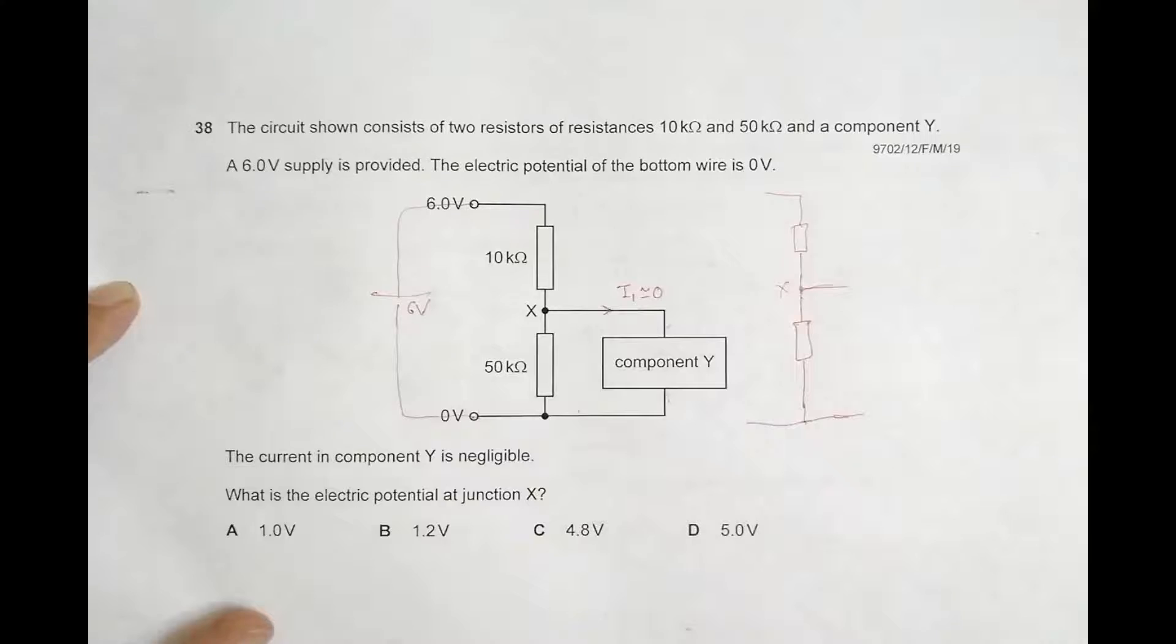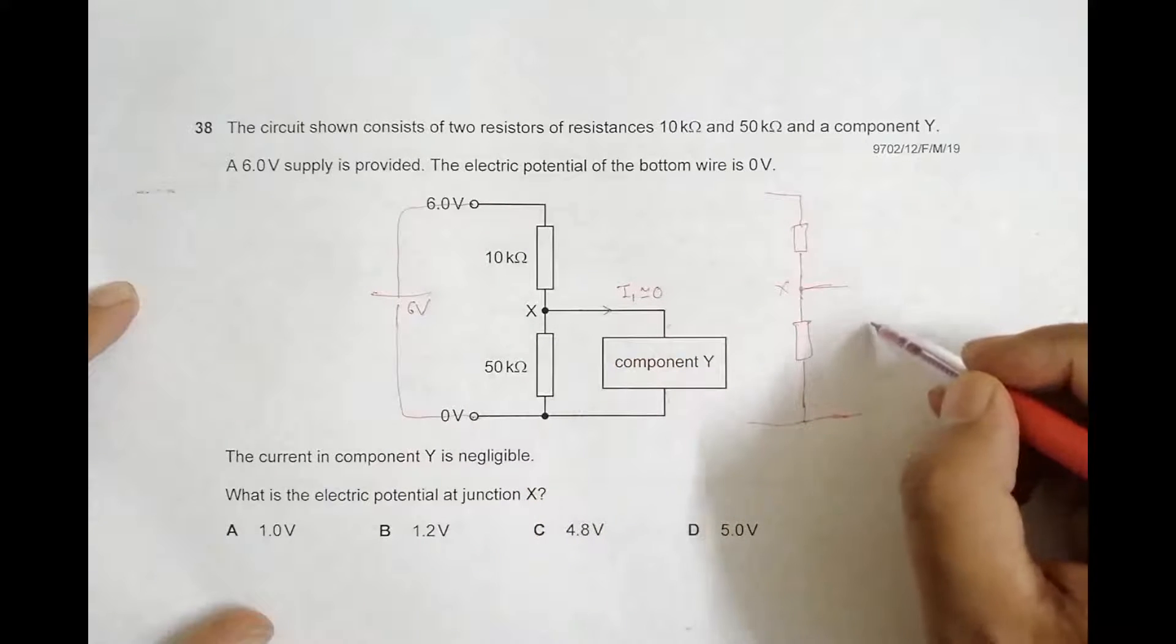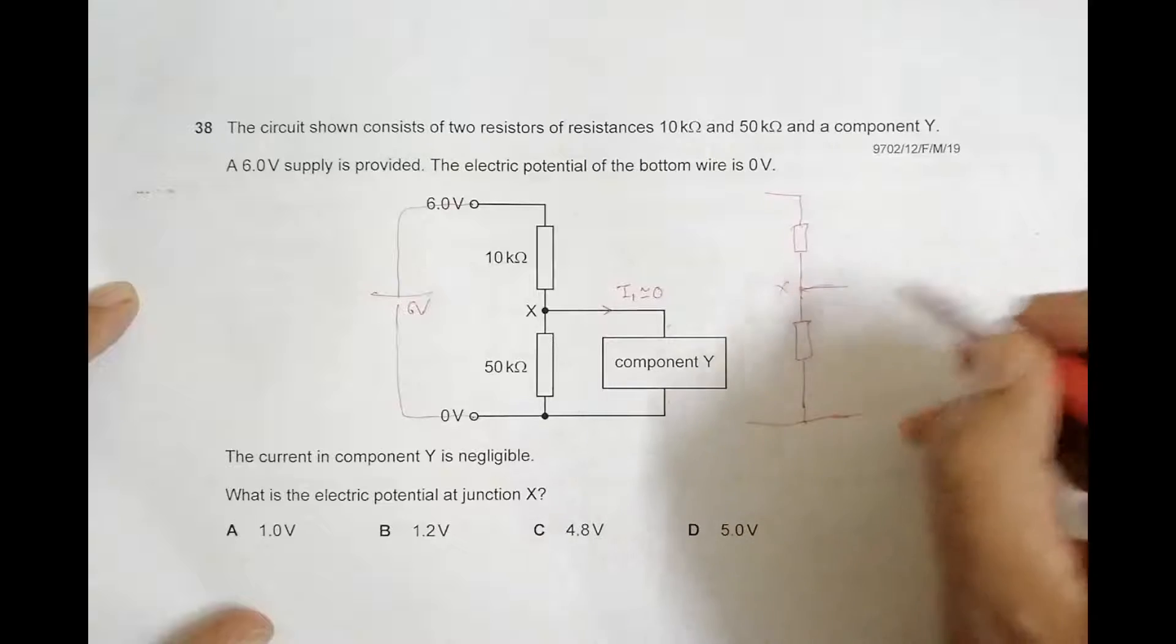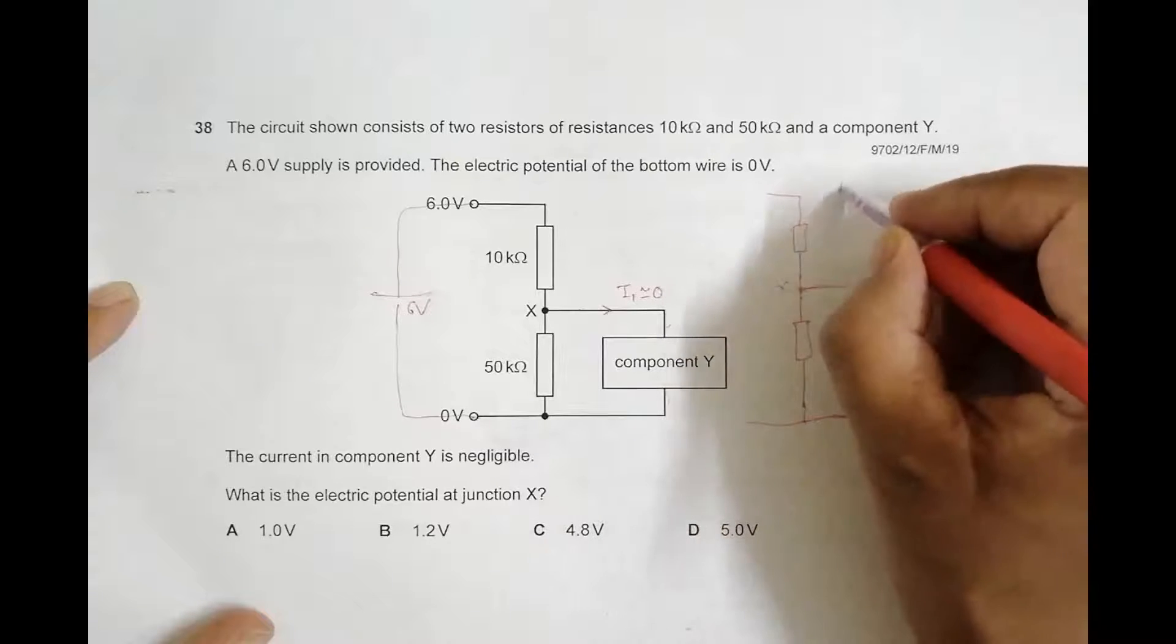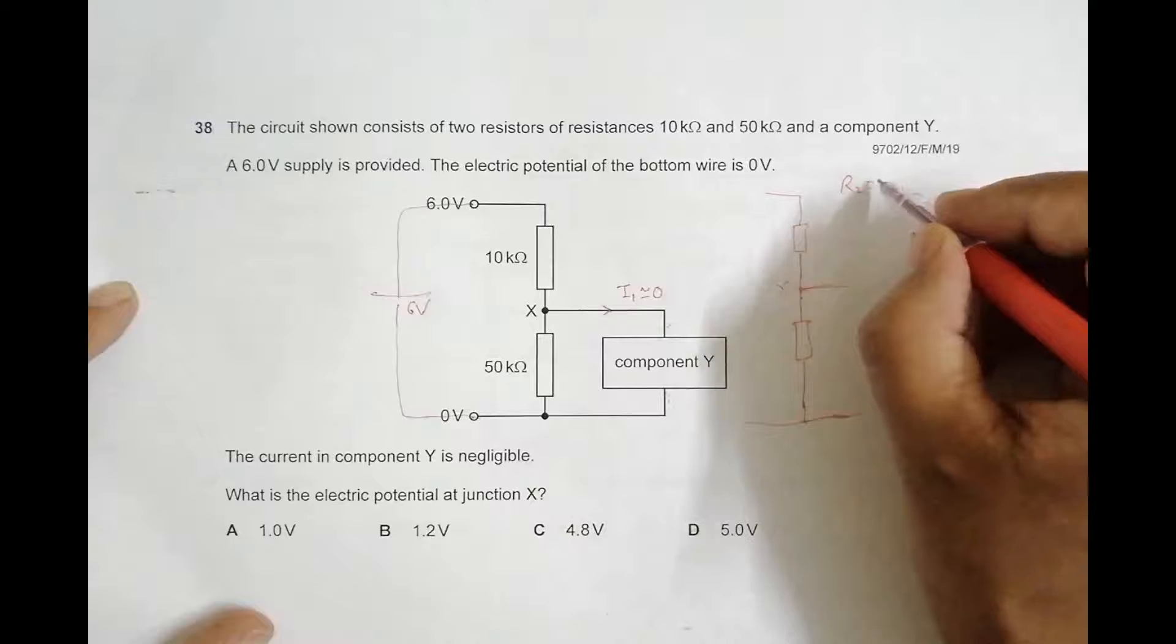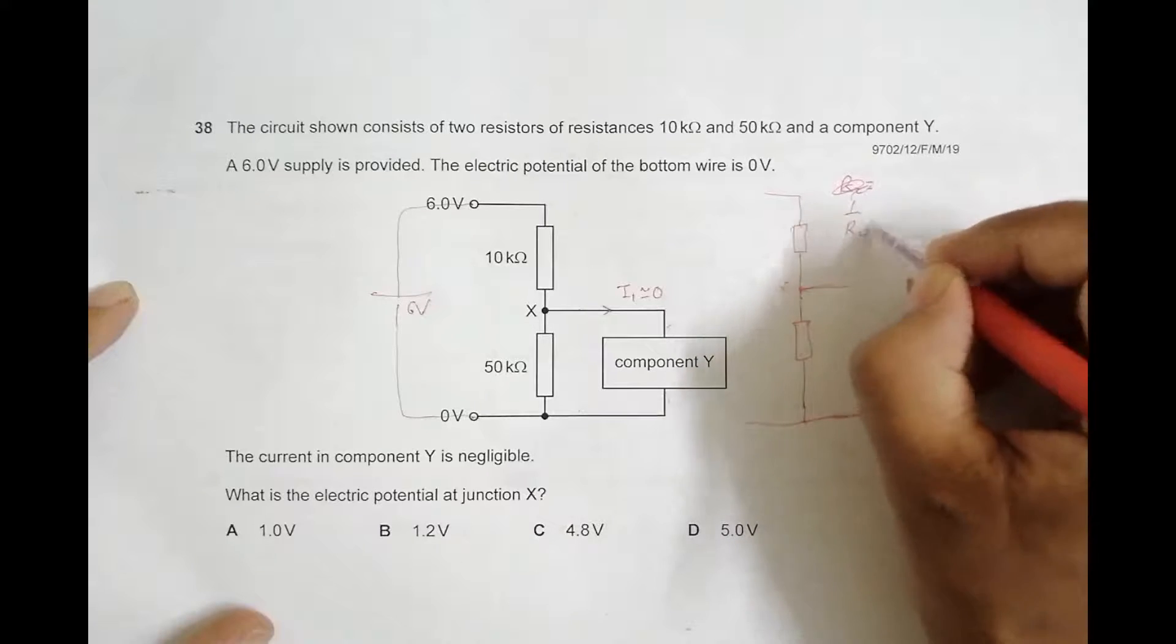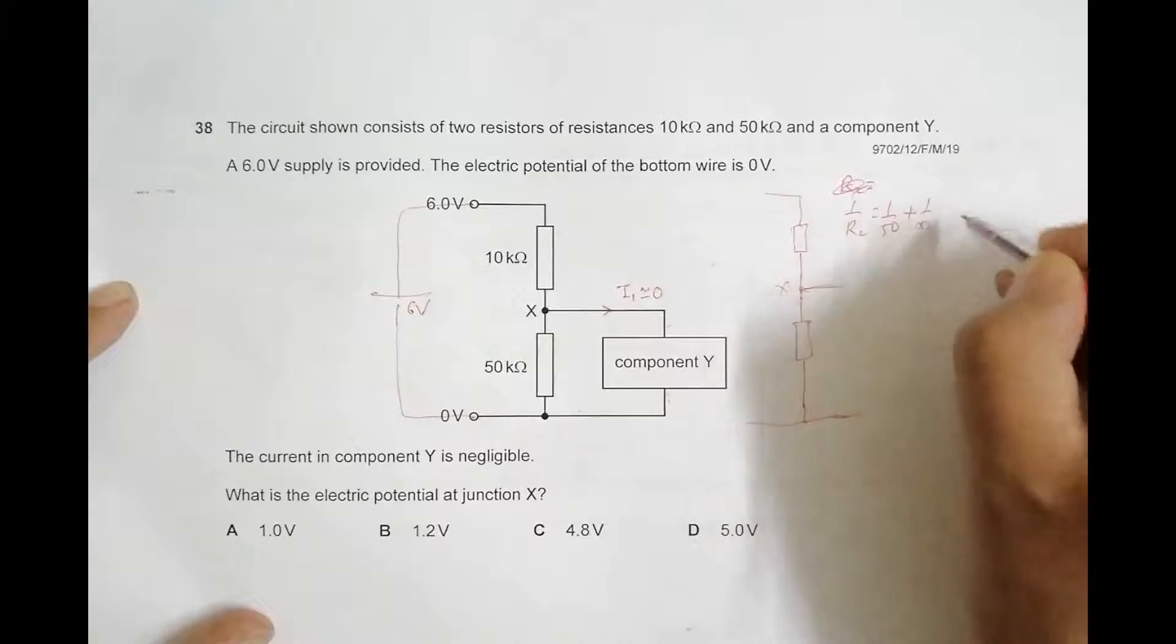I1 equals 0 means resistance here is infinite. So the total R here, R2, will be equal to... let's see, 1/R2 should be equal to 1/50 plus 1/infinity.